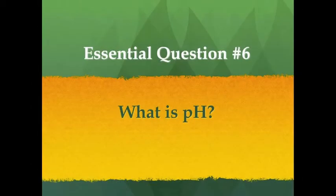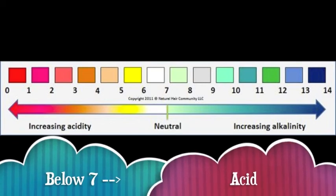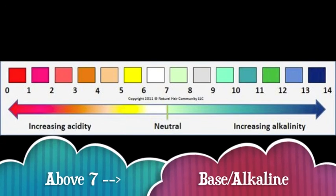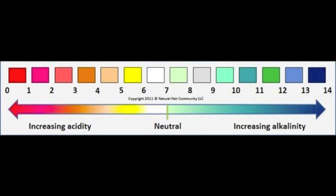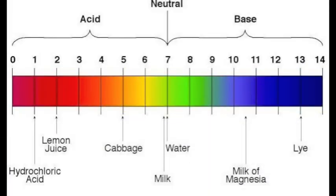Essential question number six: What is pH? pH stands for the power of hydrogen, and we can use a pH scale to determine how much hydrogen is in a solution. A pH scale ranges from 0 to 14. The lower the solution is on the pH scale, the more acidic it is. The higher the number, the more basic or alkaline the solution is. The only solution that's 7 on the pH scale is pure water — pure water is neither acidic nor basic, it's neutral. Here are some examples of solutions commonly found in households — see if you can determine whether they're acidic, basic, or neutral.